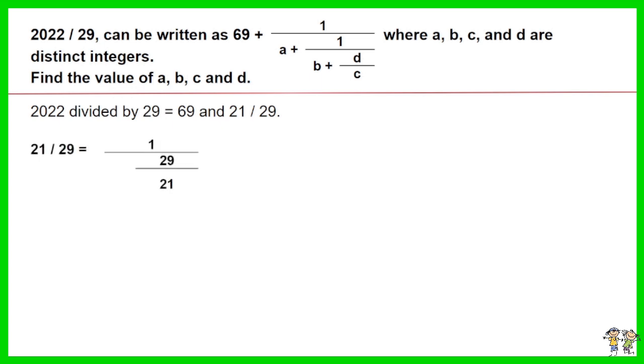21 over 29 is equal to 1 over the value of 29 over 21. Express the value of 29 over 21 as 1 plus 8 over 21.